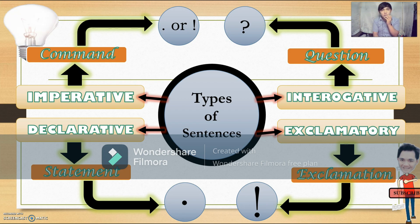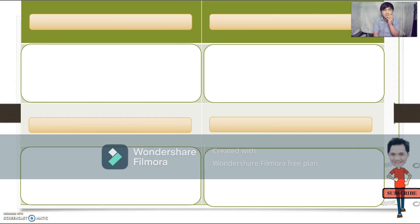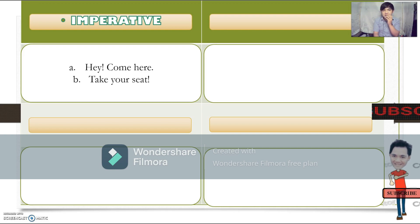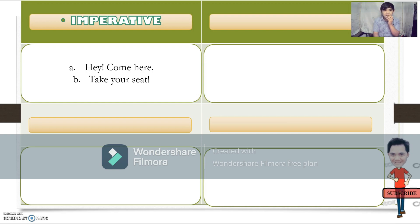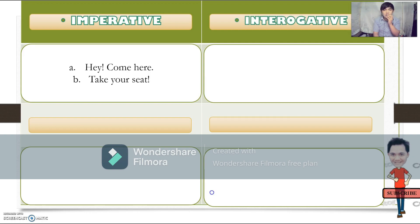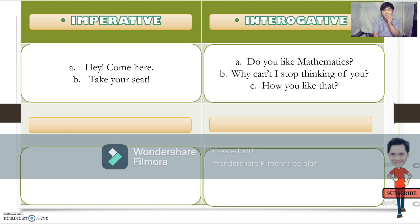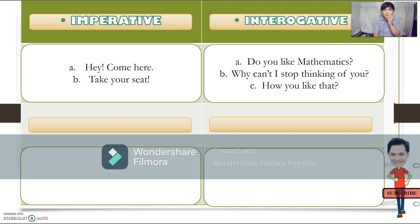In order for us to further understand what these four types of sentences are, we are going to have their examples. Imperative sentence: "Hey, come here." "Take your seat." It ends with an exclamation mark and it is giving a command to a person. Next is the interrogative sentence: "Do you like mathematics?" "Why can't I stop thinking of you?" "How you like that?" We are talking about questions here, so they end with a question mark.